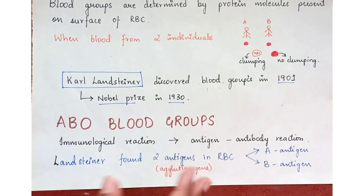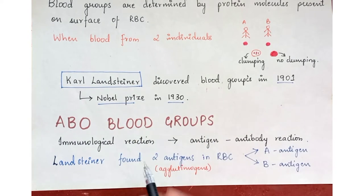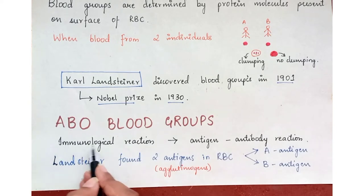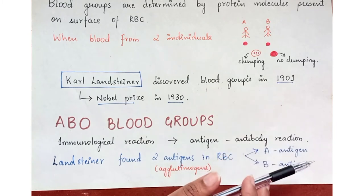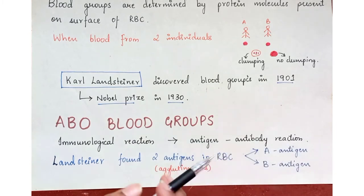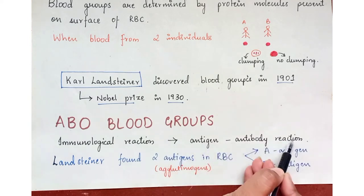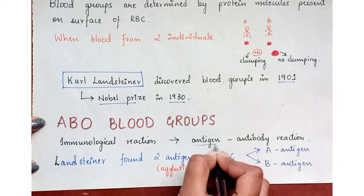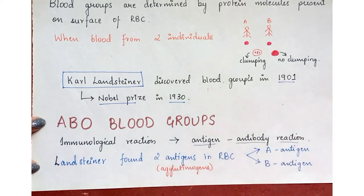Now we start the ABO blood groups, also discovered by Karl Landsteiner. This ABO blood group is based upon the antigen-antibody reaction, which is the immunological reaction taking place in the blood. Don't forget this antigen-antibody reaction.